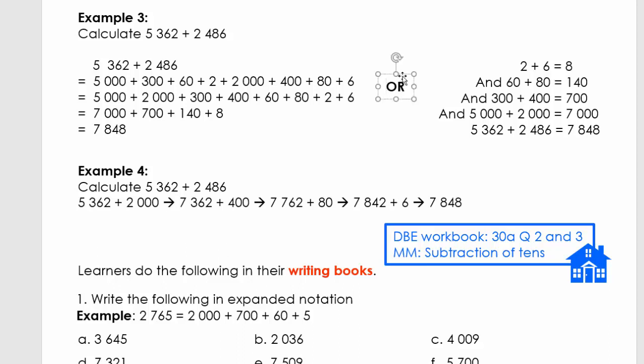Example three: we have 5362 plus 2486. First, we're going to write it in expanded notation. I'm going to point to the number and you're going to say it. This is 5000 plus 300 plus 60 plus 2. That was 5362. Let's try the next one: 2000 plus 400 plus 80 plus 6.